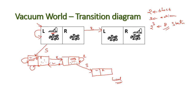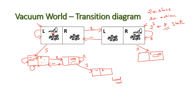Now suppose the vacuum cleaner is initially in the right direction — this is our other initial state. The possible actions are: move right, which is a no operation because the cleaner is already on the right side; move left, which changes the state to the cleaner being on the left side; or perform the suck operation. If it performs the suck operation, the right side becomes clean and the vacuum cleaner stays on the right side, while the left side remains dirty.